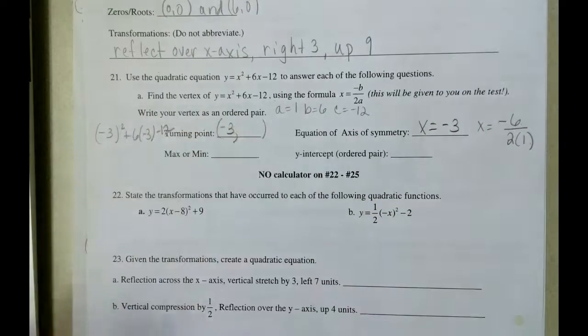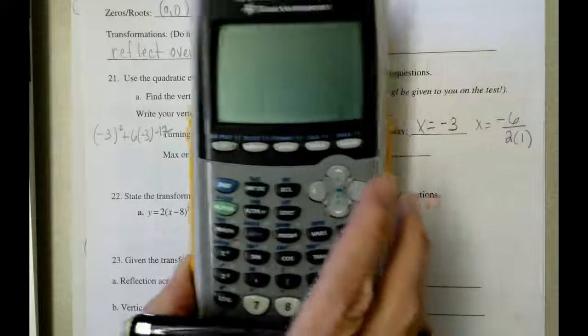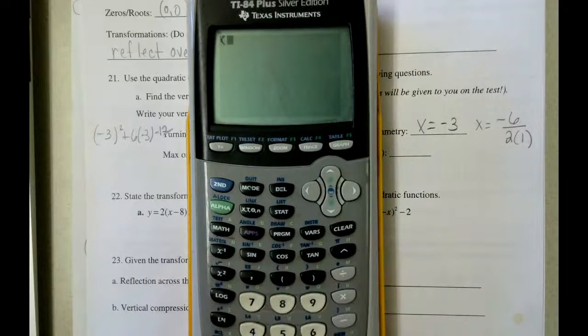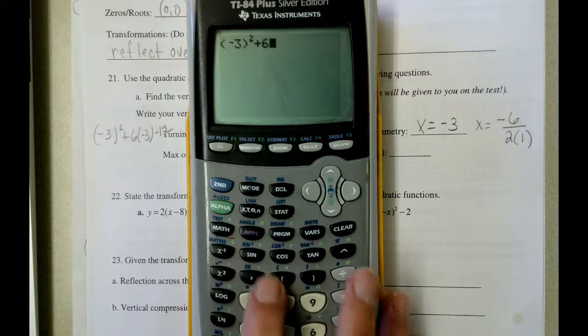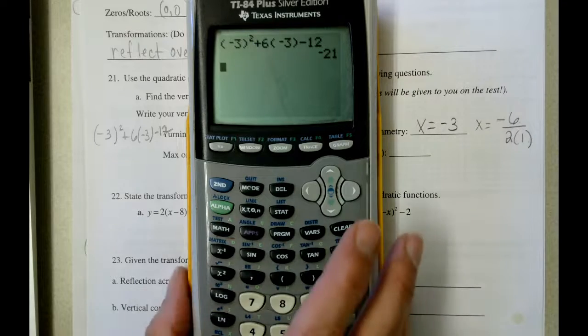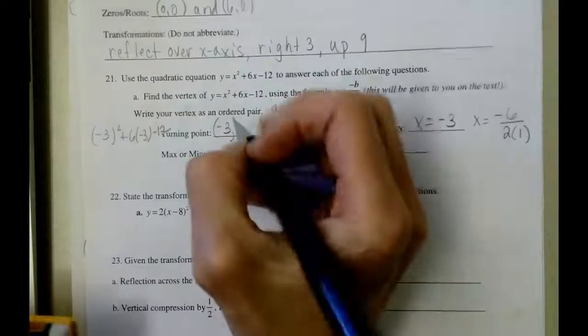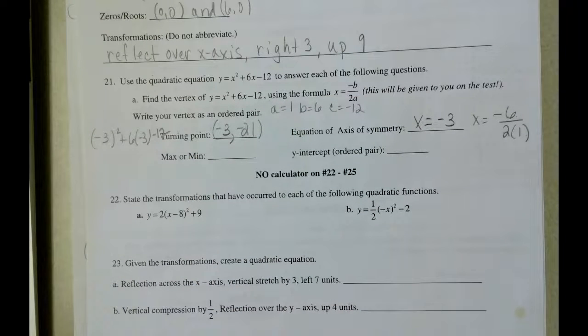So sorry I'm running out of space a little bit, but if I pull up my calculator here and type that in, remember we need parentheses around the negative 3 squared plus 6 times negative 3 minus 12. That's going to give us our vertex of, or a y value of our vertex, which is also known as the turning point of negative 21.